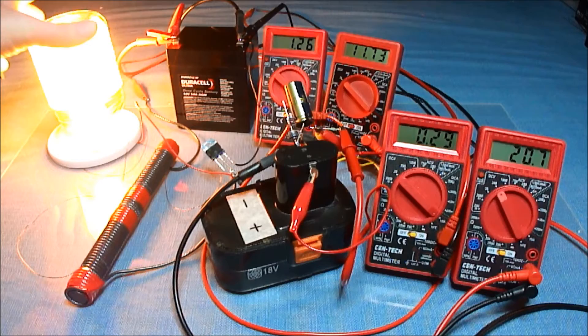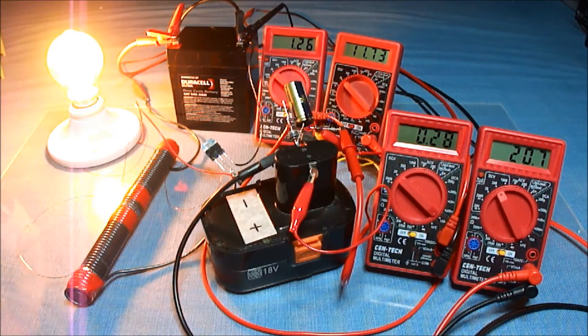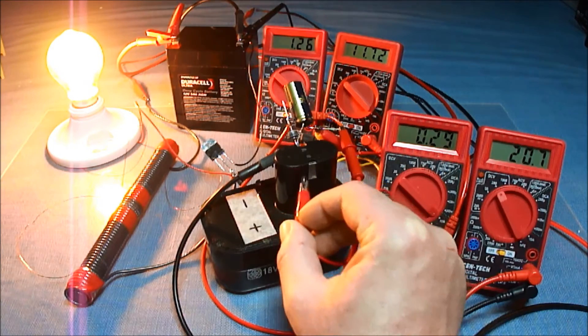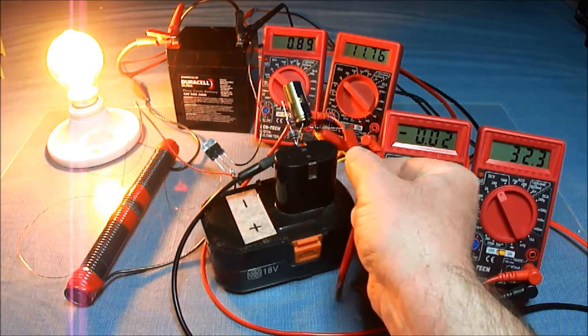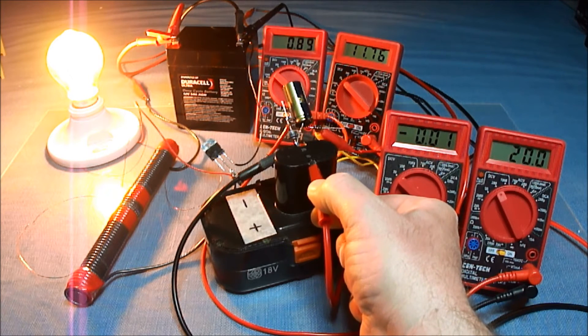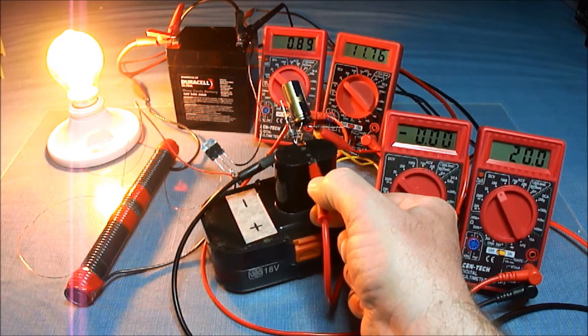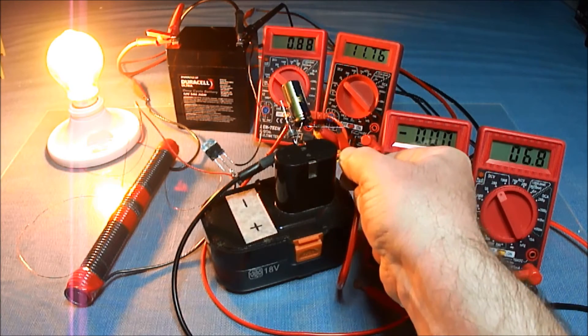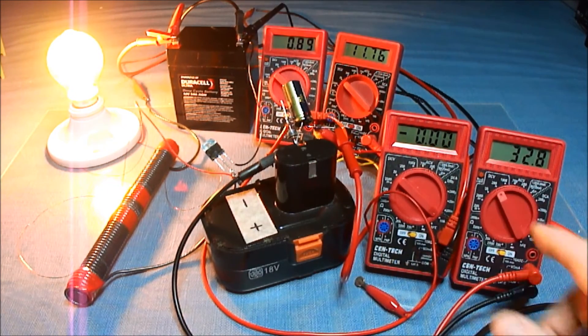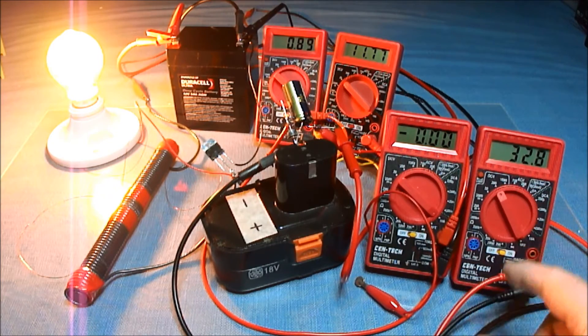I'm going to show you what the incandescent bulb does for voltage, just across the cap. And we got 20 volts in the battery. And you can see we got 32.8 volts across the cap.